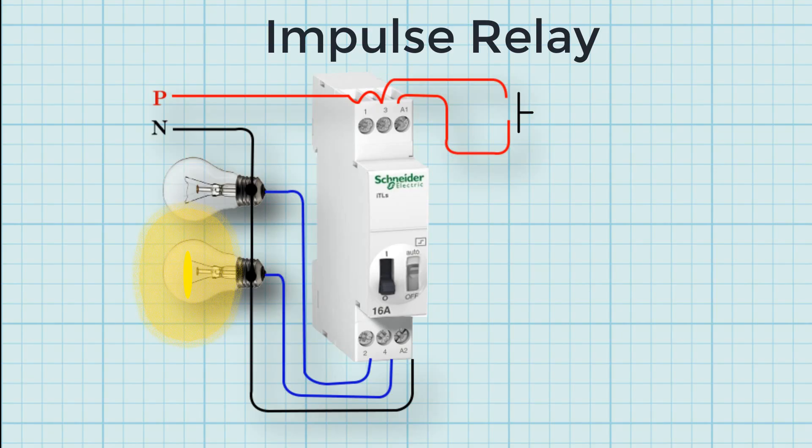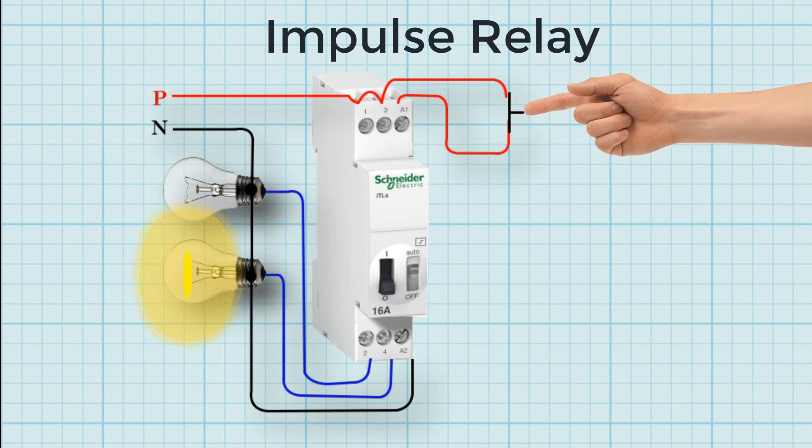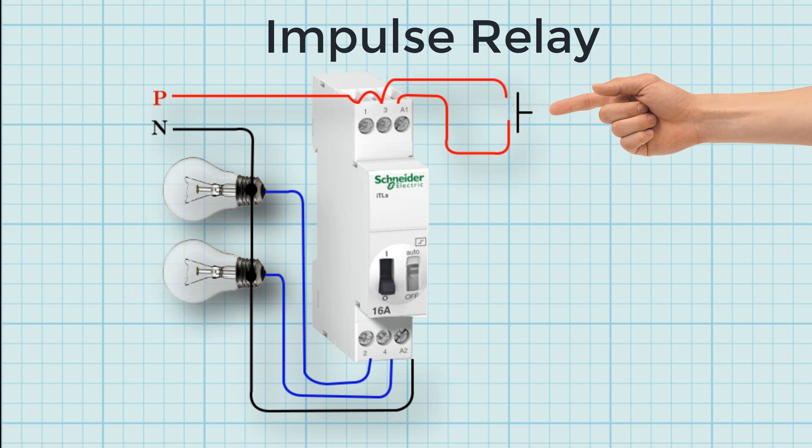Impulse relays are a form of latching relay that transfers the contacts with each pulse. Many impulse relays are made up of a magnetic latch relay and a solid-state circuit.